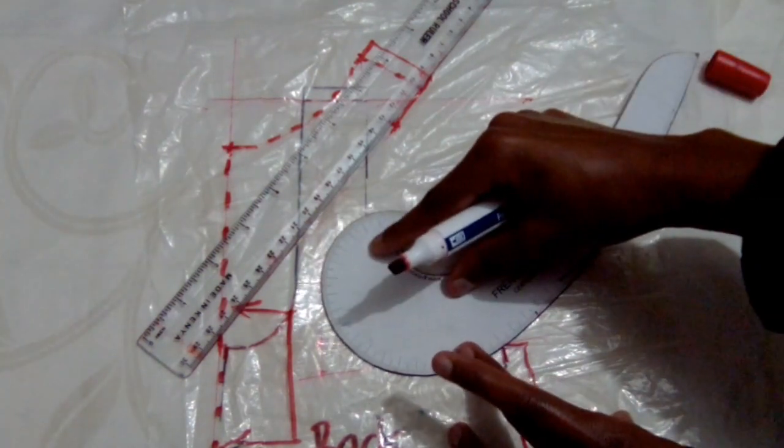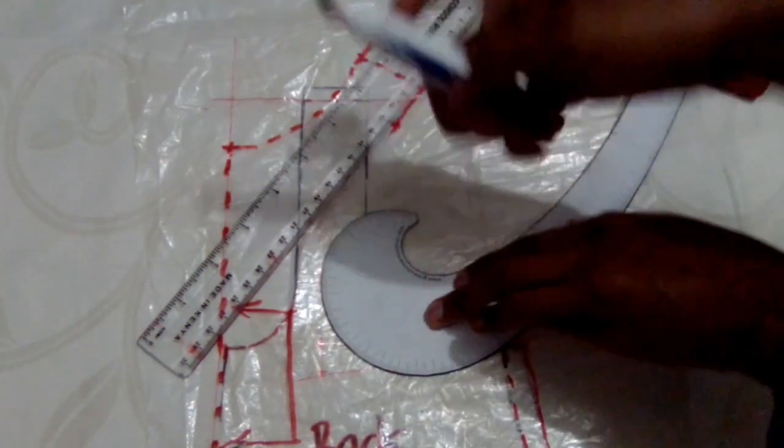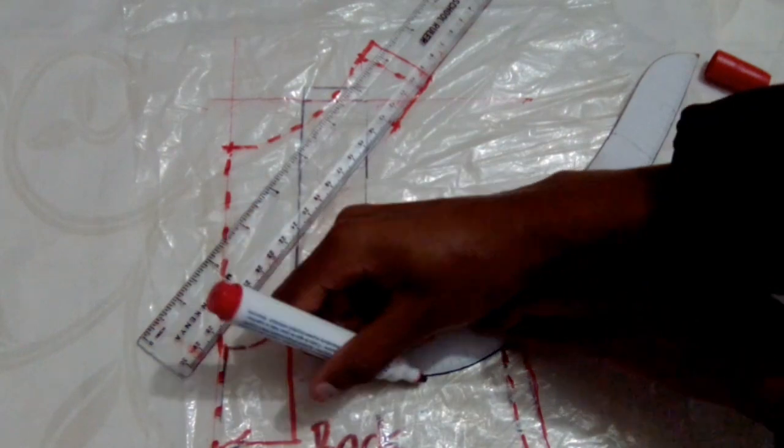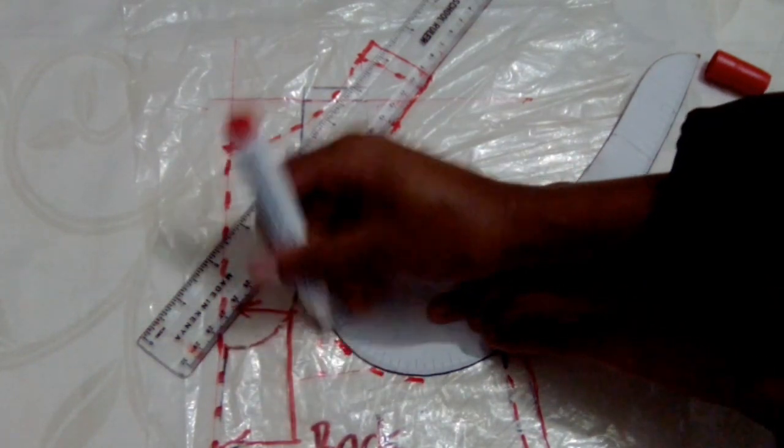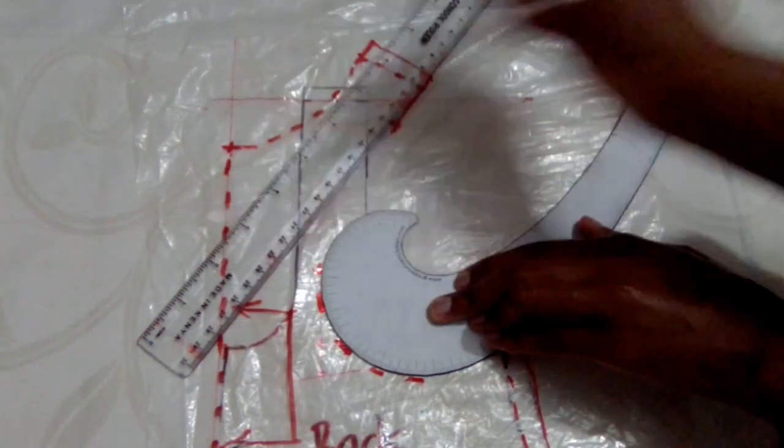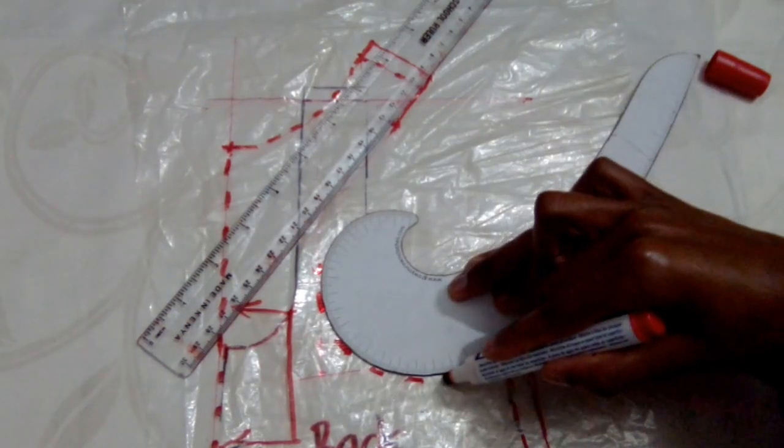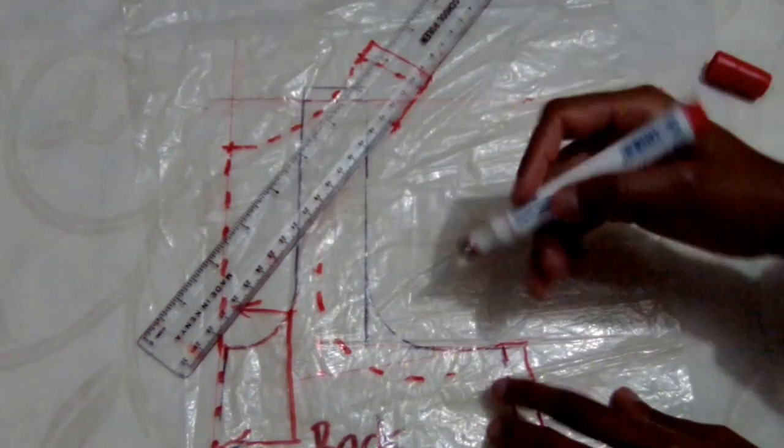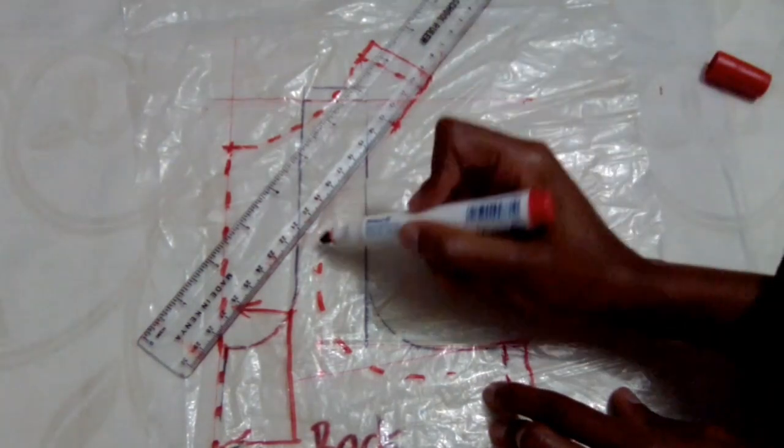Now I'm just using the scoop of my French curve ruler and drawing a curved line, making sure it touches the two-inch line like I said.